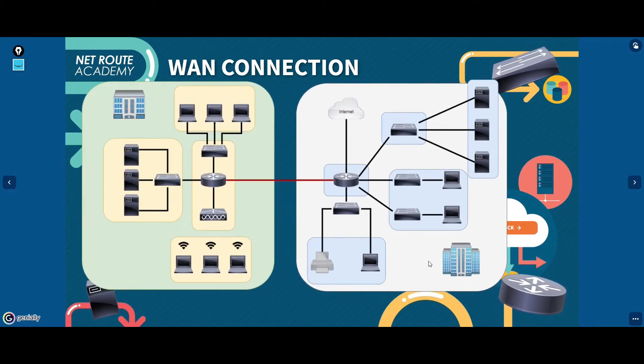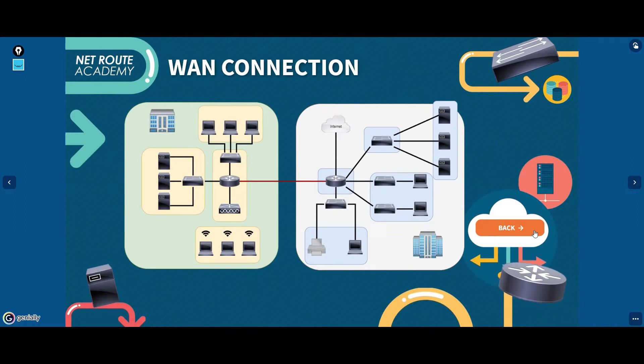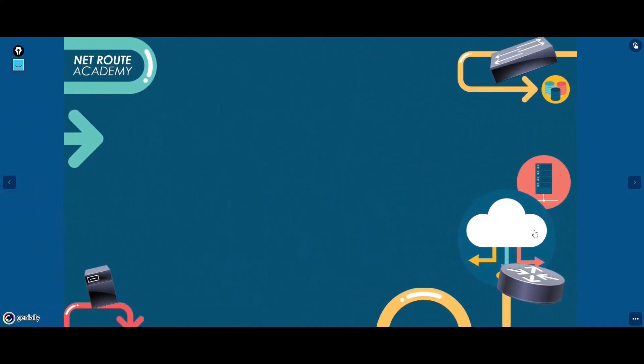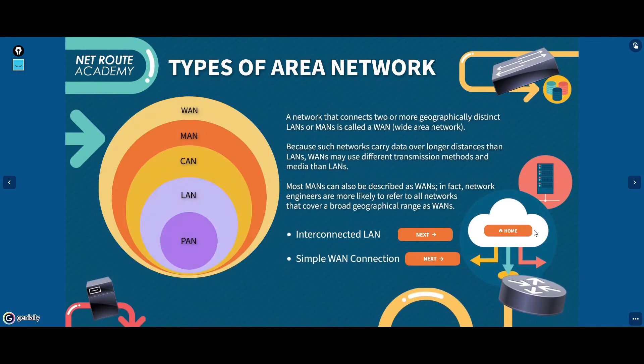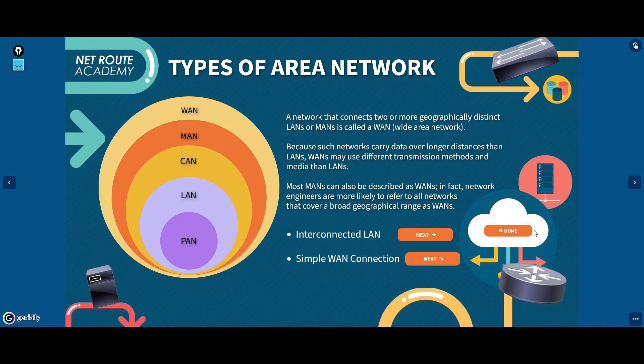government offices surrounding a state capital building is known as a metropolitan area network or campus area network. Although in reality, you won't often see those terms used or they might be used simultaneously.